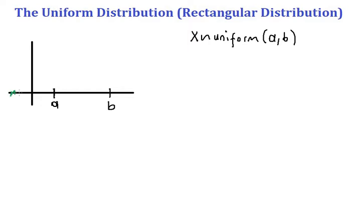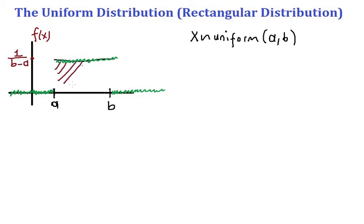Outside the interval, the probability density function is zero. Inside the interval, we have some height f of x, which equals one over b minus a. This is because the area under the curve must equal one by the properties of a PDF.